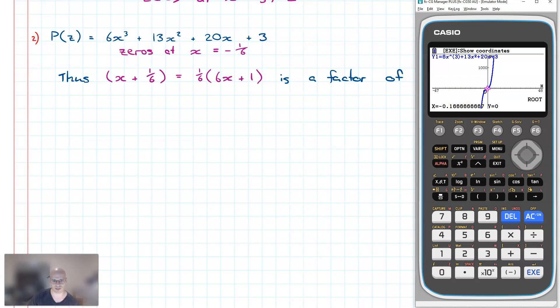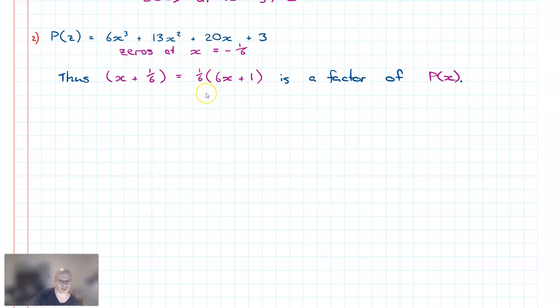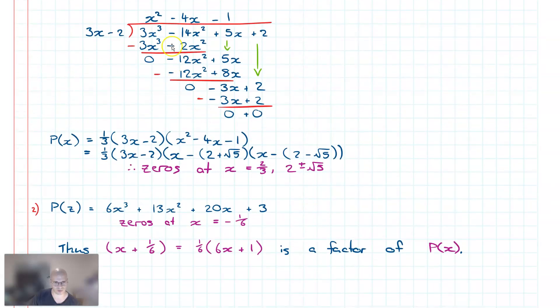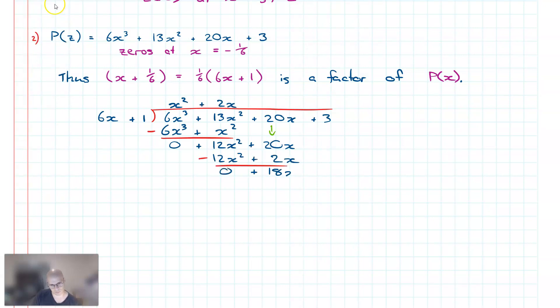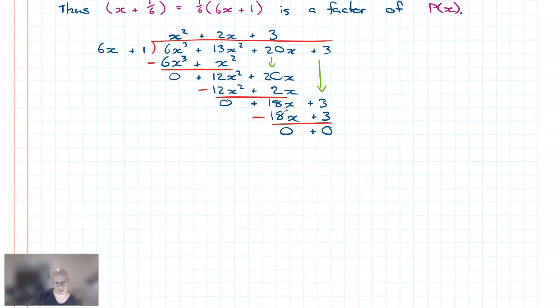Now solving for the other roots, what we need to do is, in this instance we are able to use synthetic again or we could use algebraic, but we'll use long division again because it's quite an effective algorithm. So (6x + 1), set ourselves up, let's go for it. And thus we complete the long division method. So what we can see is that P(x) is equal to (6x + 1) and then inside we have (x² + 2x + 3).